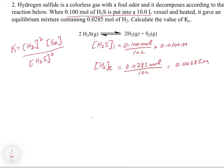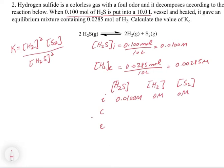We need to set up an ICE table with H₂S, H₂, and S₂. We start with only H₂S at 0.0100 M; H₂ and S₂ start at 0. For the change row, H₂S gets −2x, H₂ gets +2x, and S₂ gets +x, based on the stoichiometry. Notice the products form at different ratios, so we need to be careful. At equilibrium: H₂S = 0.0100 − 2x, H₂ = 2x, and S₂ = x.